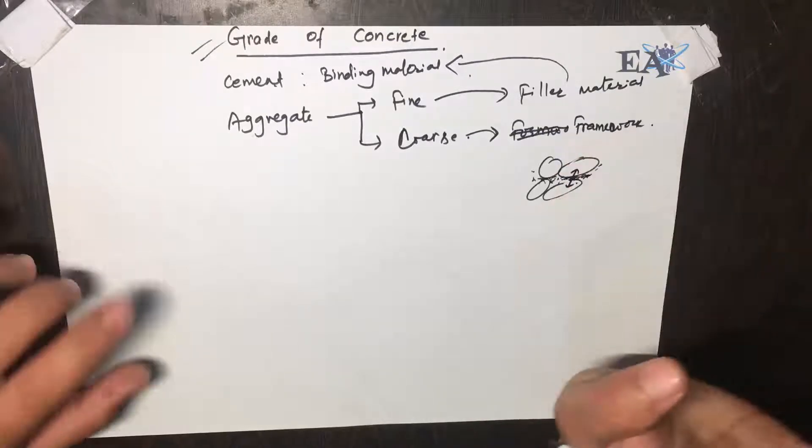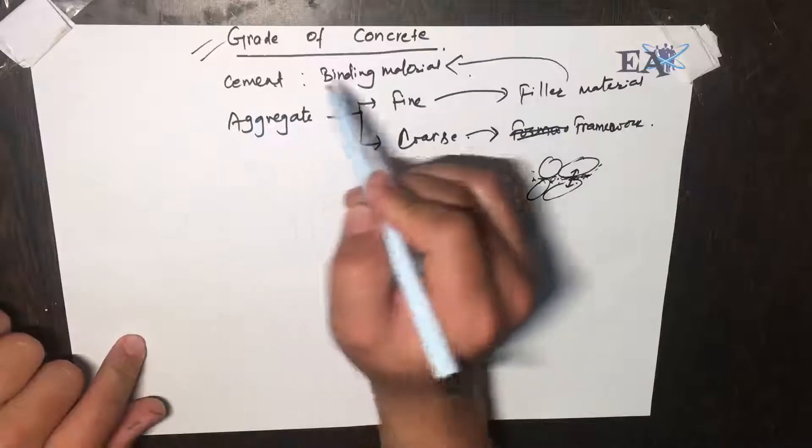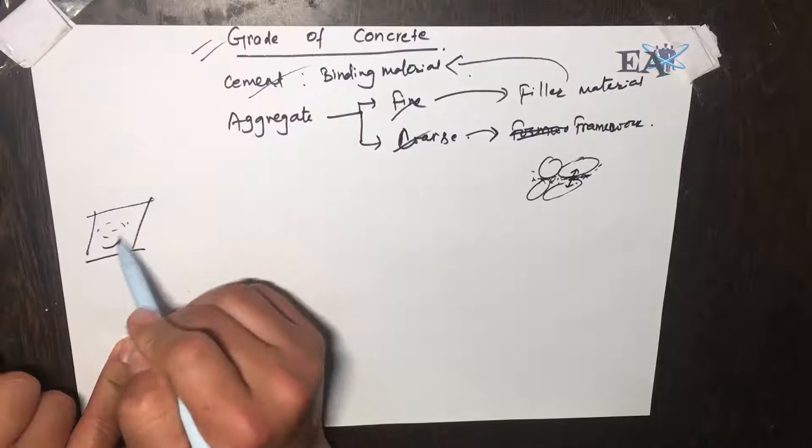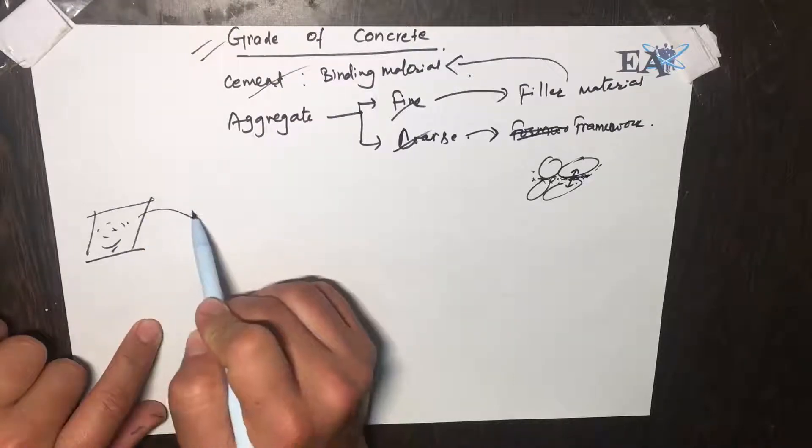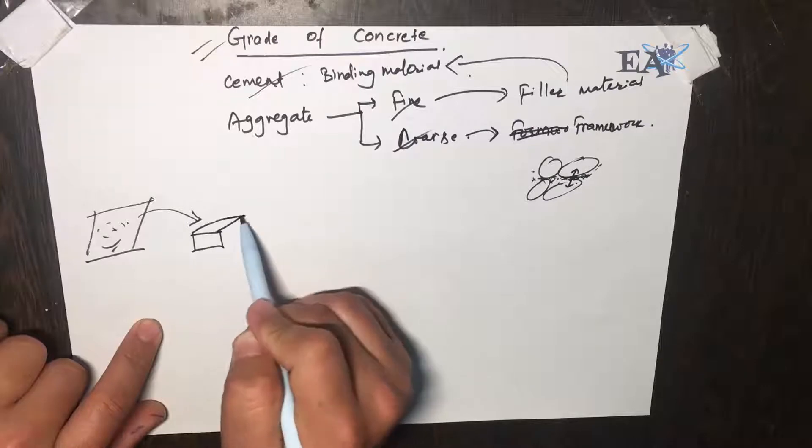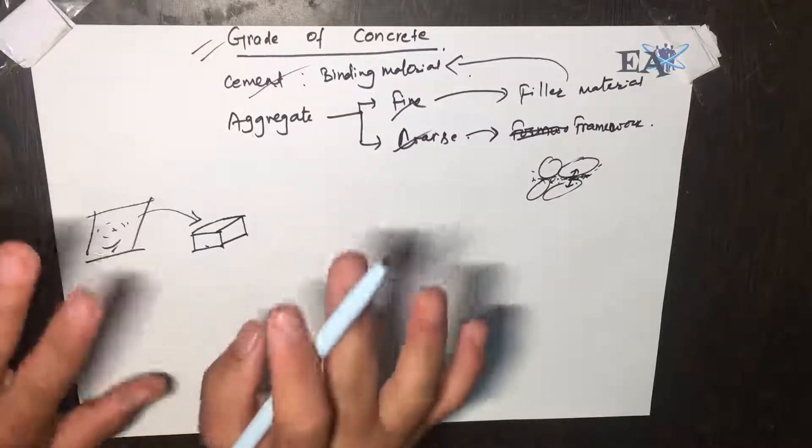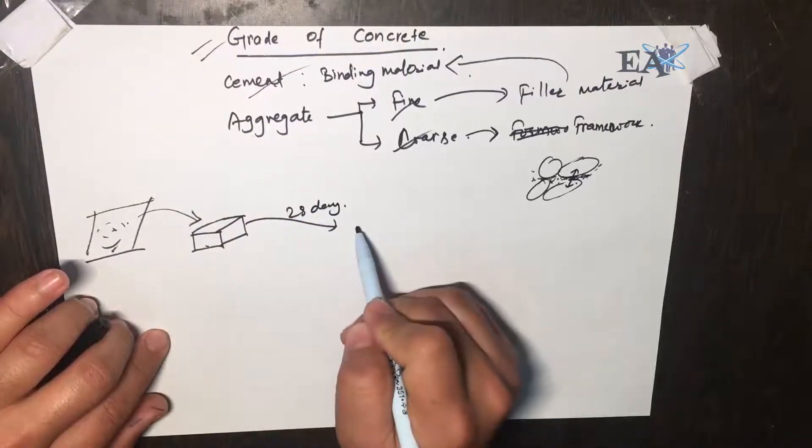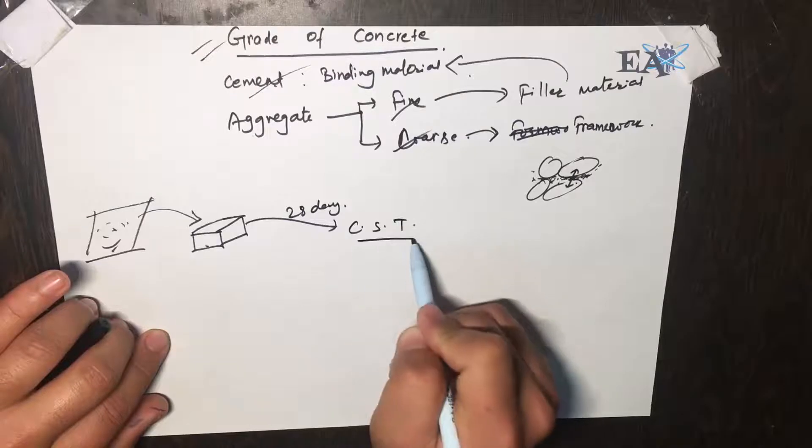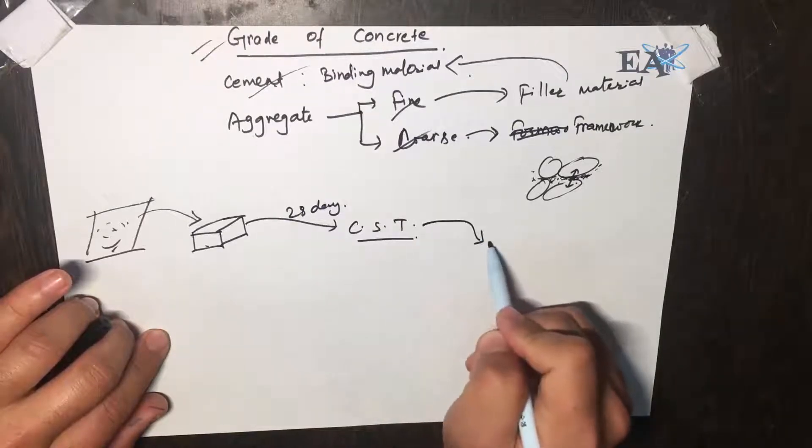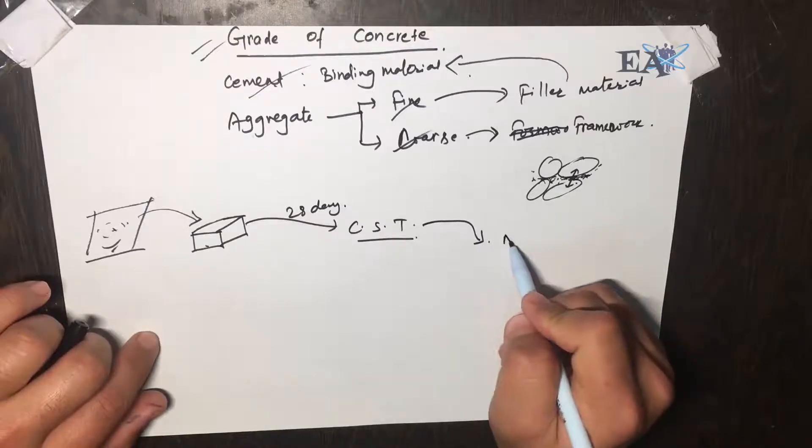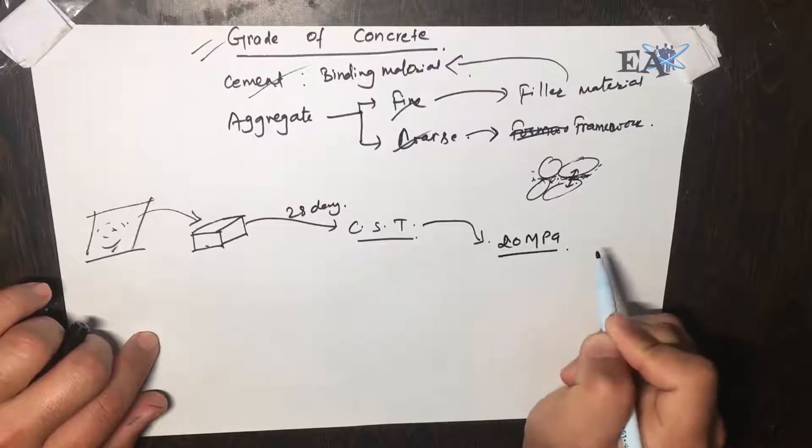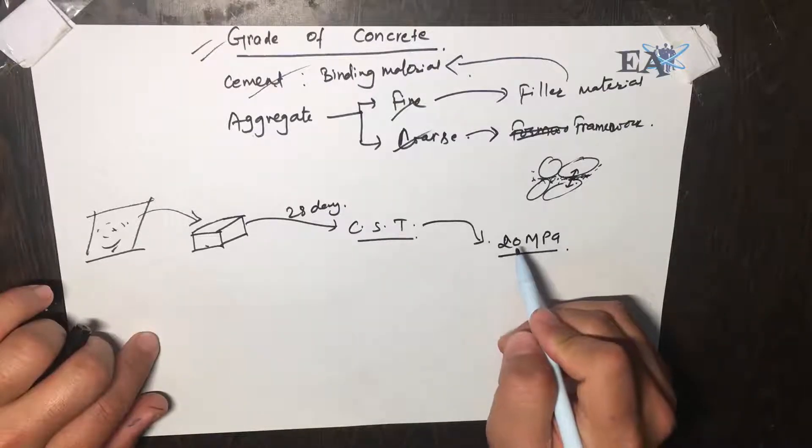So suppose that using a certain ratio of these three things we made a batching of concrete, and after that we put this concrete in a cube—this is 15 by 15 by 15 cube for testing the compressive strength. And after curing it for 28 days, we subjected it to the compressive strength test and we found that the compressive strength of this cube is 20 MPa—that is 20 mega pascal. So in this case the grade of concrete is M20.